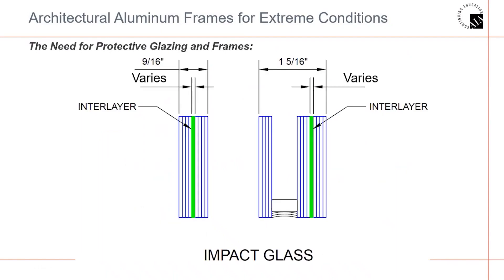Here's an example of typical glazing infill. The options you'll see for impact applications — it's important that in Section 8800 you are clear about your glass configuration. The green line in each of these represents a laminate layer. Laminate layers are typically called out either 0.30, 0.60, or 0.90.